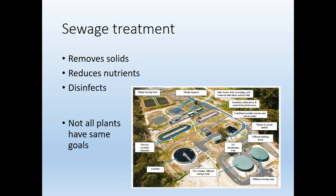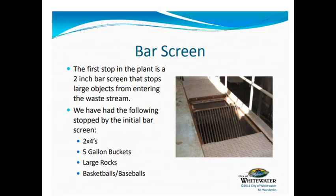I thought the best way to explain this would be to go through how Whitewater's actual sewage treatment plant works. This image is not Whitewater's plant, but it is an example of one. The first thing that happens at Whitewater's sewage plant is there's a bar screen — basically a big grate that stops all the trash. There can be plenty of things that make their way down the drain pipes, and that bar screen stops everything — it's a two-inch bar screen.